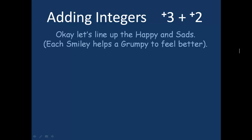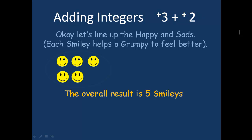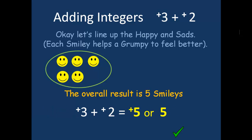Another example: positive three plus positive two. We have three happy faces and two more happy faces, because we had positive three plus positive two, so we're only dealing with happy positives. The overall result is five smileys. Positive three plus positive two equals positive five, which we can just write as the normal number five.